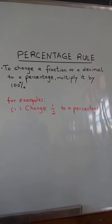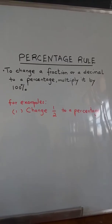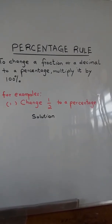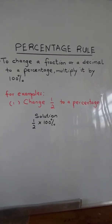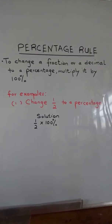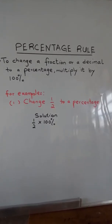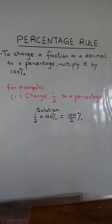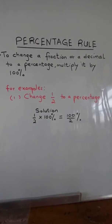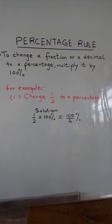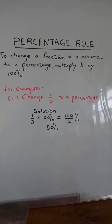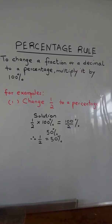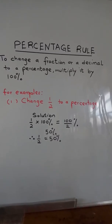Example number one: change one over two to a percentage. Solution: we multiply one over two by 100 percent, which is equal to 100 over two percent, which is equal to 50 percent. Therefore, one over two is equal to 50 percent.